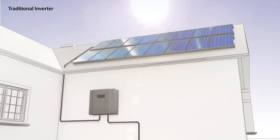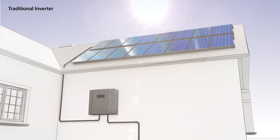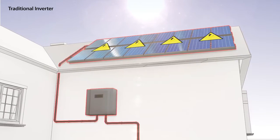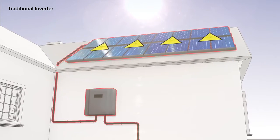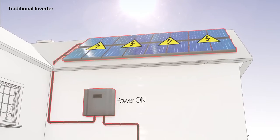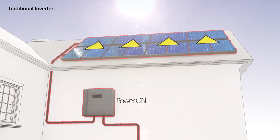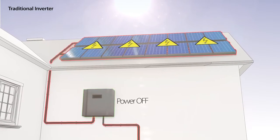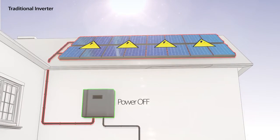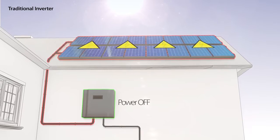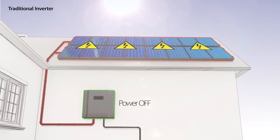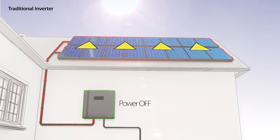The DC cables, which connect the panels to a string, carry high voltage as long as the sun is shining. The traditional inverter cannot shut down the panel's DC voltage, and therefore poses serious risks to installers and firefighters.